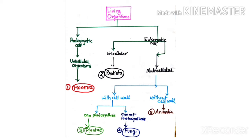And lastly, eukaryotes that are multicellular but without a cell wall form the fifth kingdom, Animalia. So finally, we get five kingdoms: first Monera, second Protista, third Plantae, fourth Fungi, and fifth Animalia. In the next video, we will discuss these five kingdoms, their characteristics, and their examples.